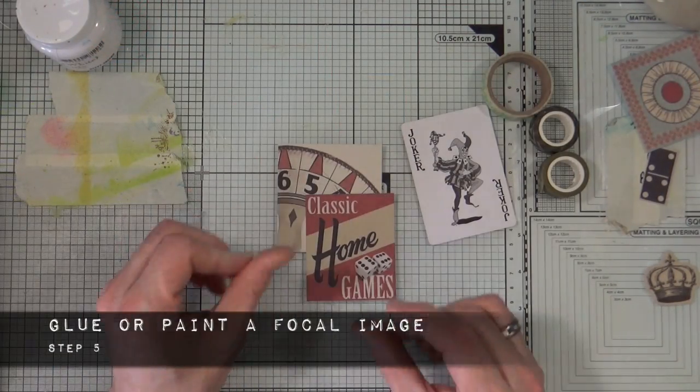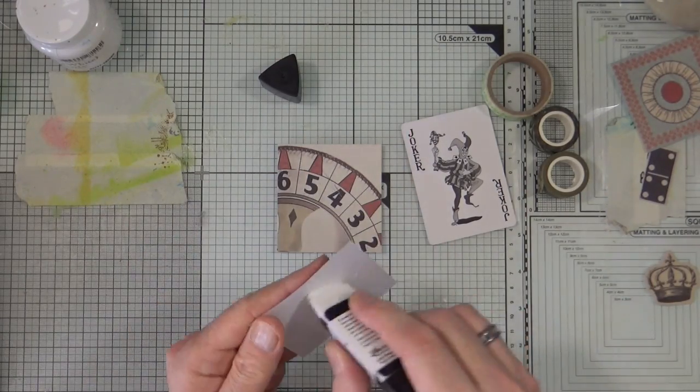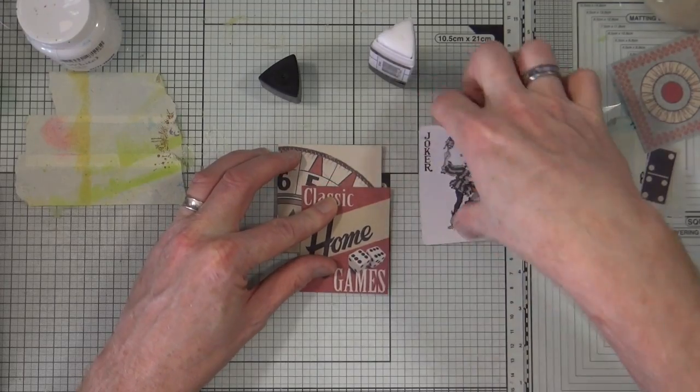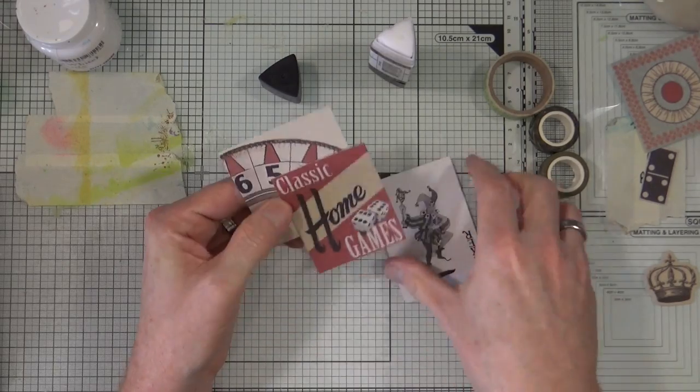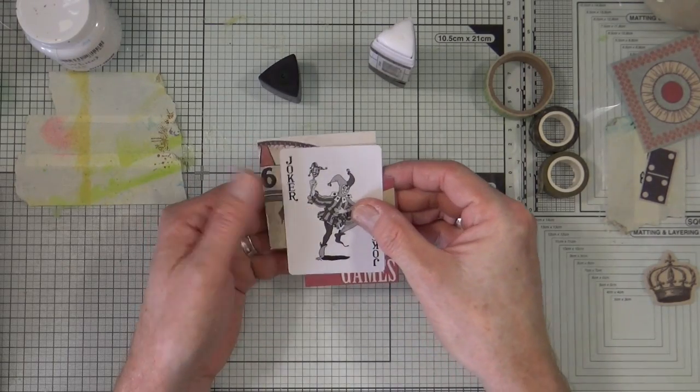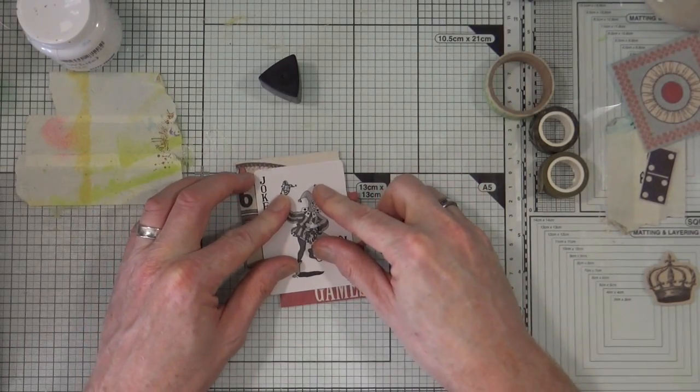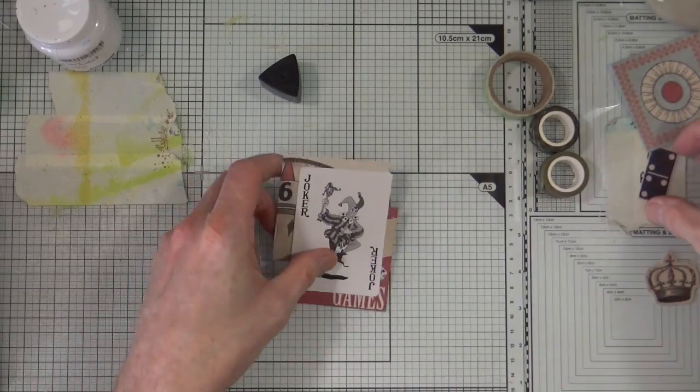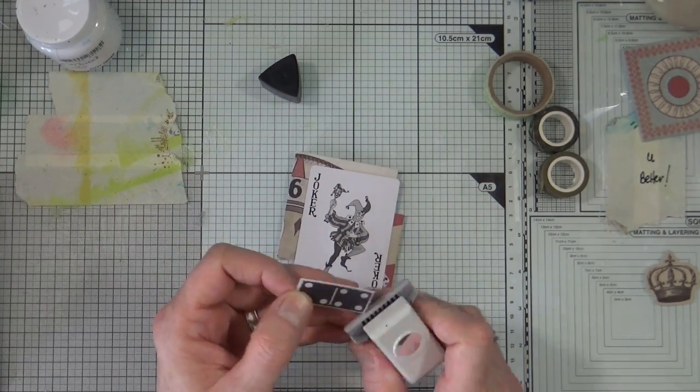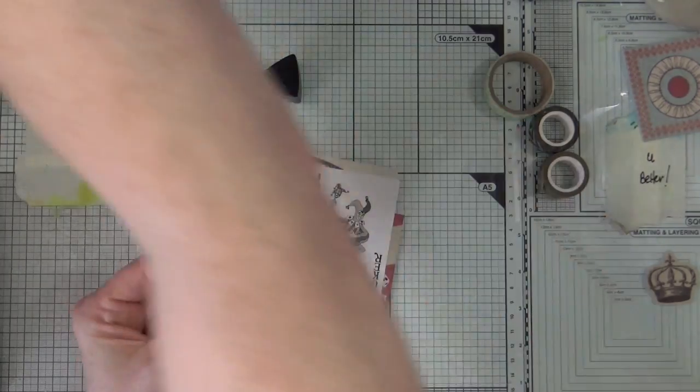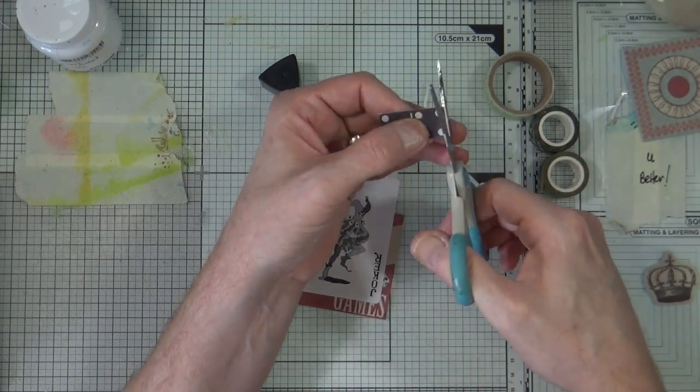So step number five is to glue or paint a focal image, so I'm going to create an embellishment or a paper cluster. I have some pieces of ephemera that were sent to me in happy mail and I have a joker playing card that I'm going to use as my main focal image for this page. So I'm going to arrange a nice cluster of elements together and then I'm going to add that to my page using some foam pads because I want a little bit of depth and dimension, and I'm just fiddling there with a little image of a domino. I can't even say it today but it didn't fit so I'm having to trim it out with my scissors.